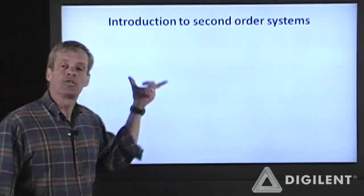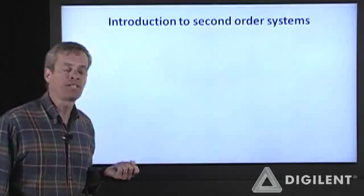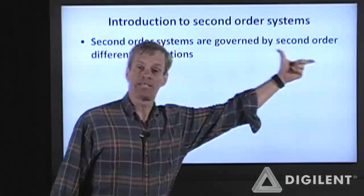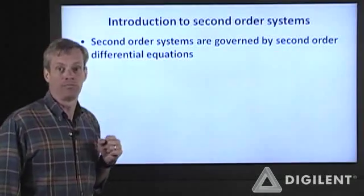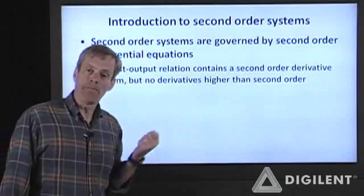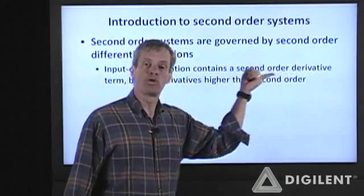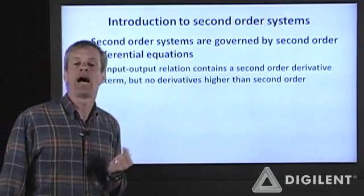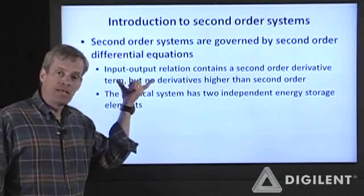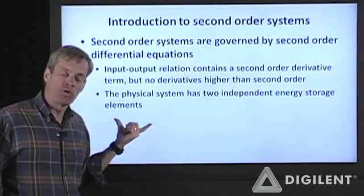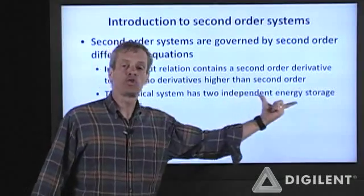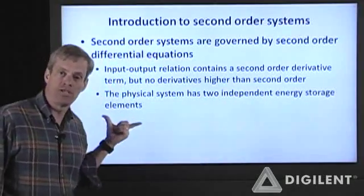First, a quick introduction to what we mean by a second order system. Second order systems, as the name might imply, are governed by a second order differential equation. That means that the input-output relationship for the system contains a second order derivative but no derivatives higher than second order. This implies, the same way a first order system implied one energy storage element, a second order system has two independent energy storage elements.